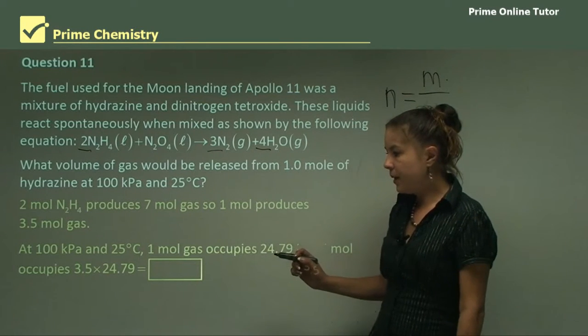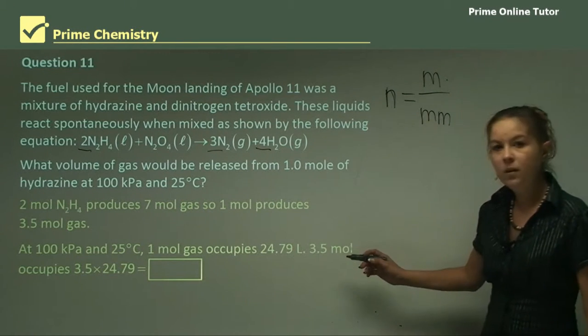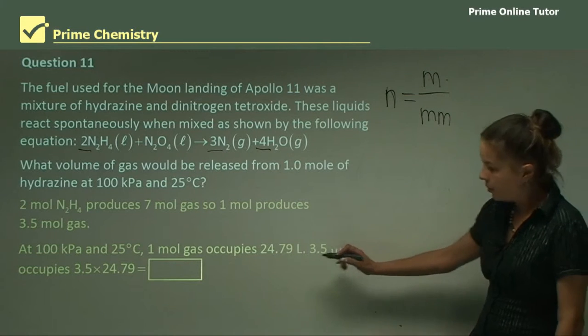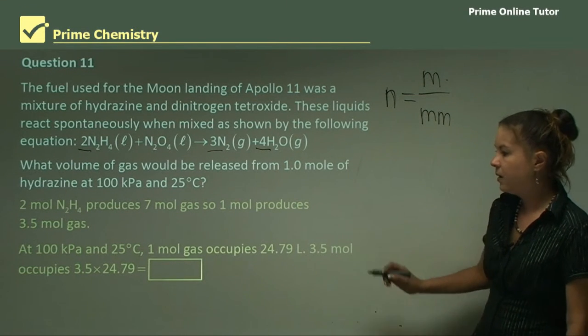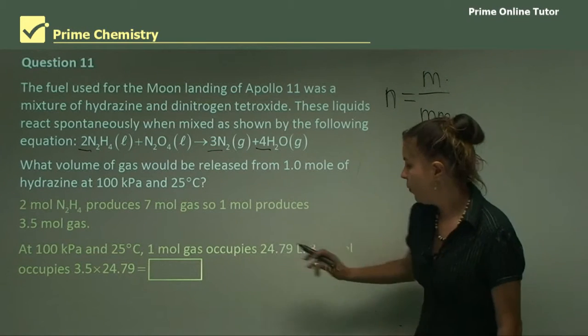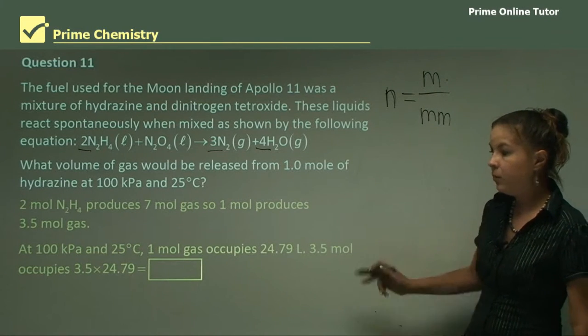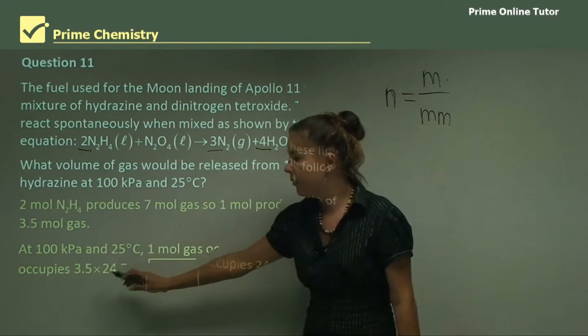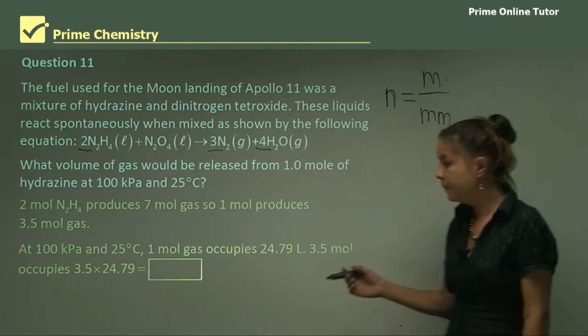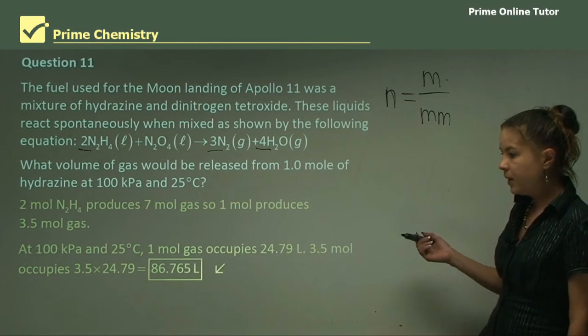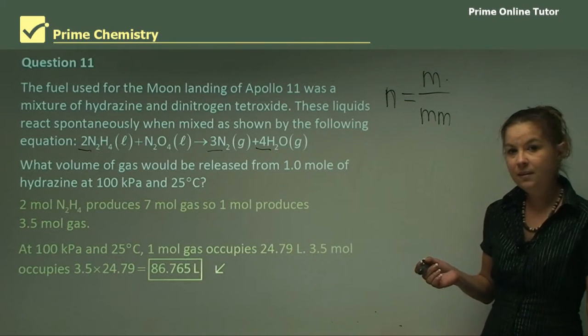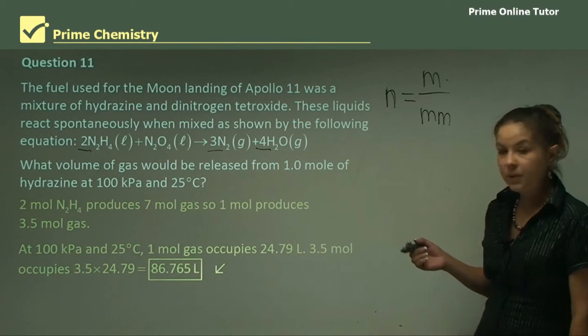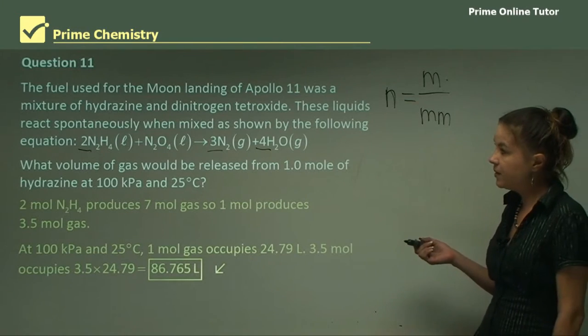So, at 100 kilopascals and 25 degrees, one mole of gas occupies 24.79 liters. So therefore, for 3.5 moles, it will occupy 3.5 times 24.79, which equals 86.765 liters.